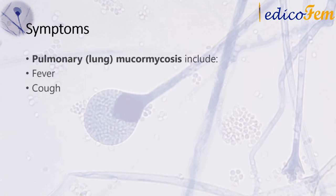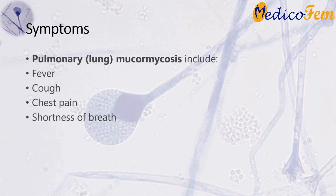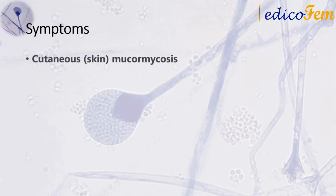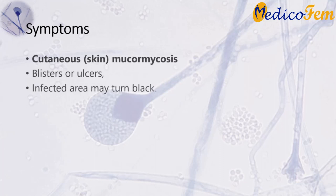Symptoms of pulmonary or lung mucormycosis include fever, cough, chest pain, and shortness of breath. Cutaneous or skin mucormycosis can look like blisters or ulcers, and the infected area may turn black. Other symptoms include pain, warmth, excessive redness, or swelling around a wound.